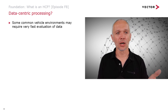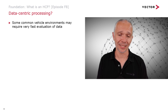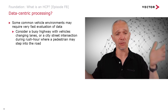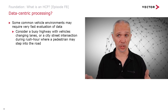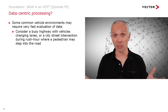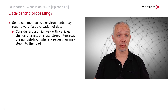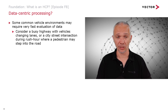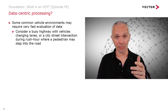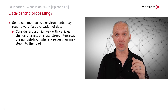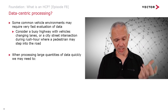Data-centric processing — some common vehicle environments may require very fast evaluation of data. Consider a busy highway where vehicles are changing lanes, maybe causing others to jam on their brakes. Clearly, if we've got a car trying to navigate that situation, we don't want it to collide at high speed with another vehicle. Or we may be at a city street intersection during rush hour, and a pedestrian suddenly steps out into the road. We prefer not to hit the pedestrian, so we want to notice they've appeared and take action to protect them — it's not just about protecting us inside the vehicle, but also the people around it.